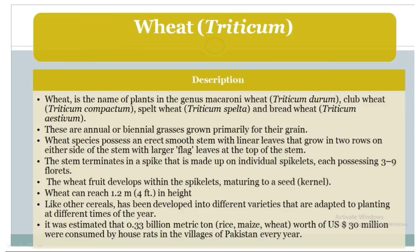The stem terminates in a spike made up of individual spikelets, each possessing 3 to 9 florets. The wheat fruit develops within the spikelet, maturing to a seed which can reach 1.2 mm in height. Like other cereals, wheat has been developed into different varieties that adopt planting at different times of the year. It was estimated that 0.33 billion metric tons of rice, maize, and wheat worth US $30 million were consumed by house rats in villages of Pakistan every year.